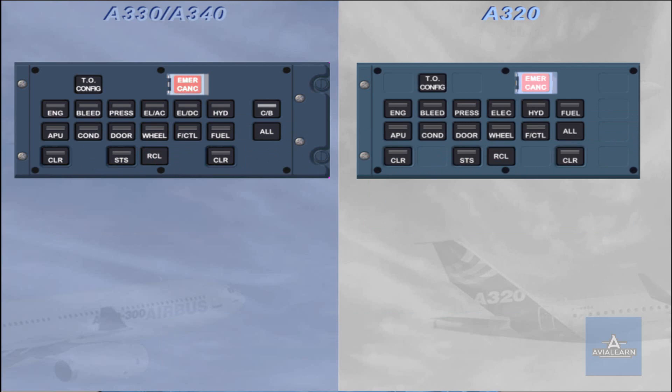On the ECAM control panel, ECP, there are two differences you can notice. The first one is that on the A320, one electrical key is fitted only, instead of two for AC and DC on the Long Range. The second difference is that on the A320, the circuit breaker CB ECAM system page is not available, as CBs are in the cockpit. Thus, eleven systems can be selected on the A320 rather than thirteen on the A330 and A340.